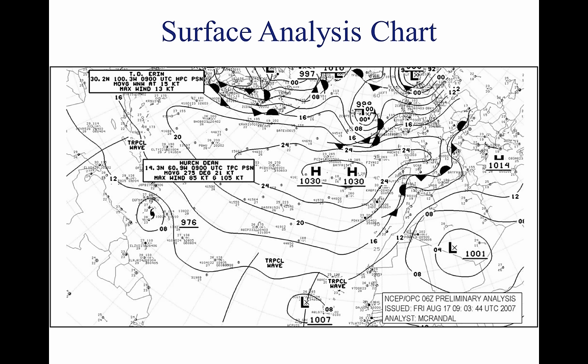Weather charts are graphic charts that depict current or forecast weather. They provide an overall picture of the United States and should be used in the beginning stages of flight planning. Typically, weather charts show the movement of major weather systems and fronts. Surface analysis, weather depiction, and radar summary charts are sources of current weather information. Significant weather prognostic charts provide an overall forecast weather picture.